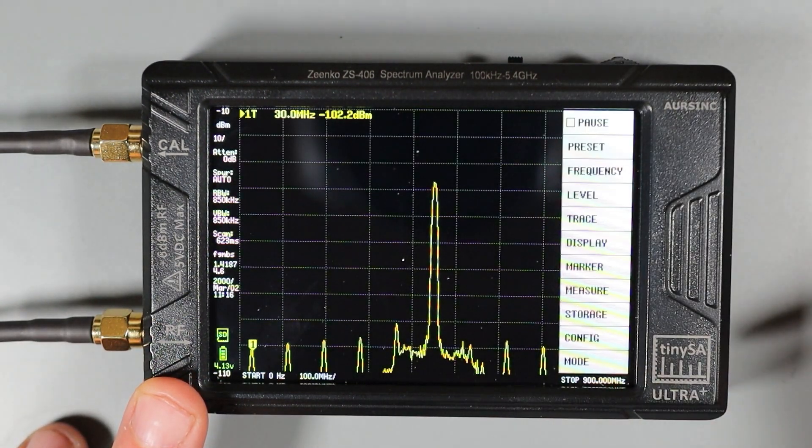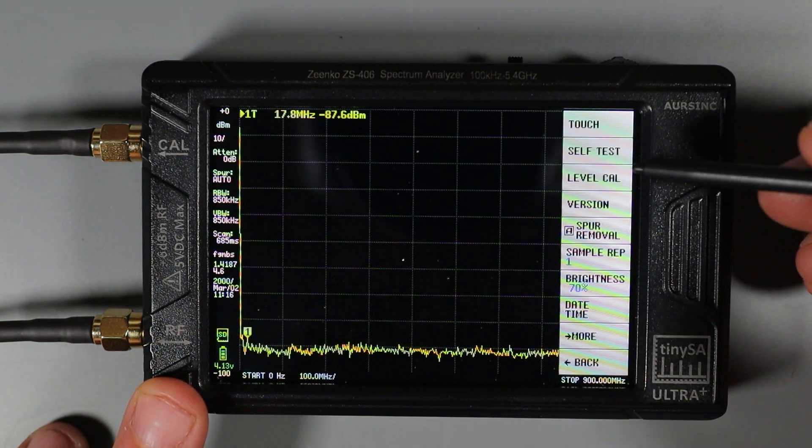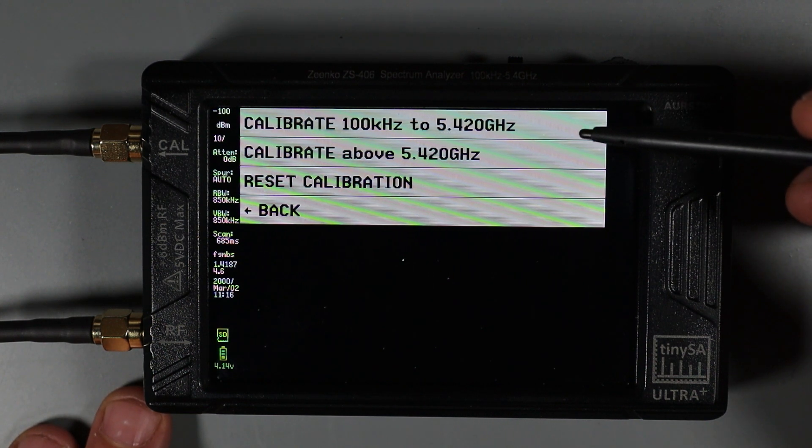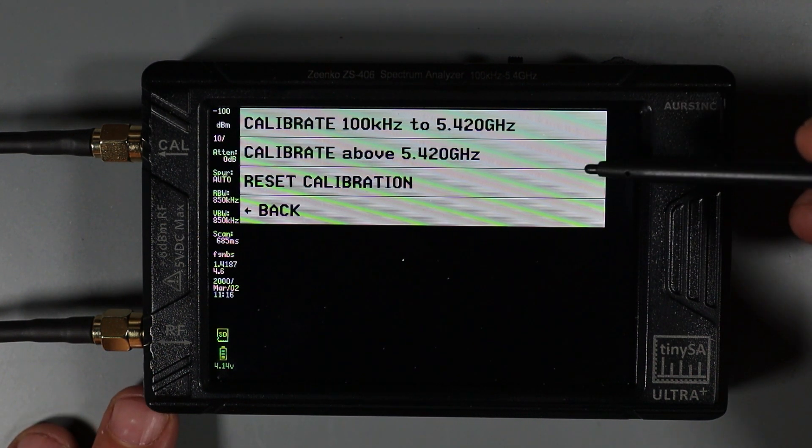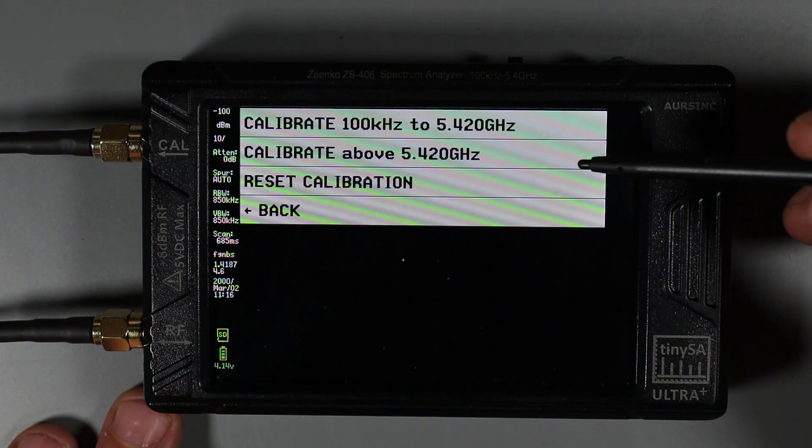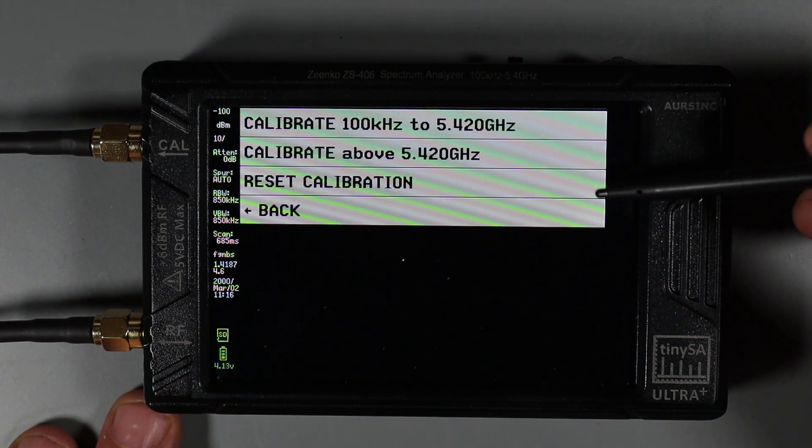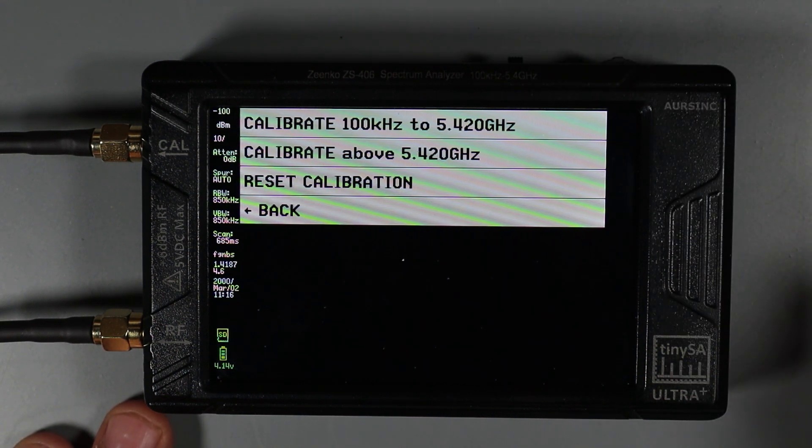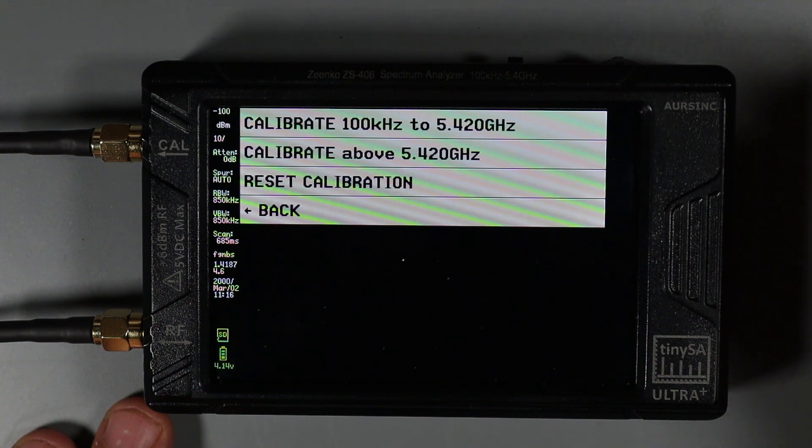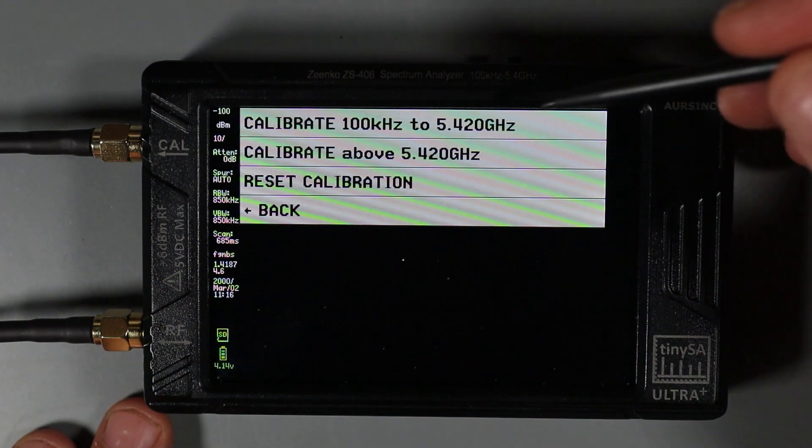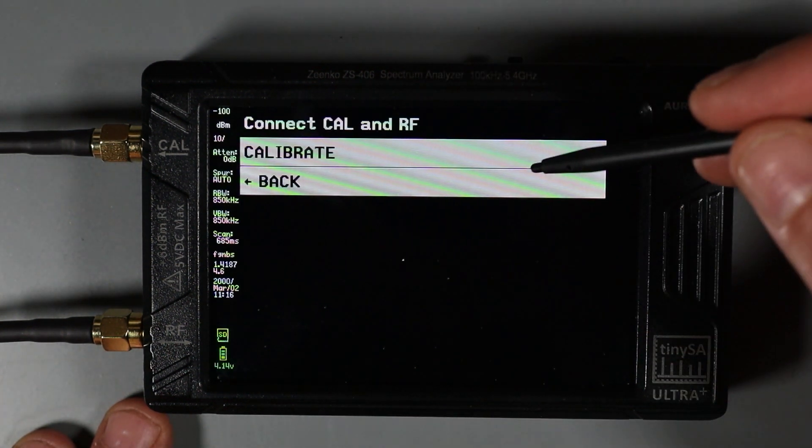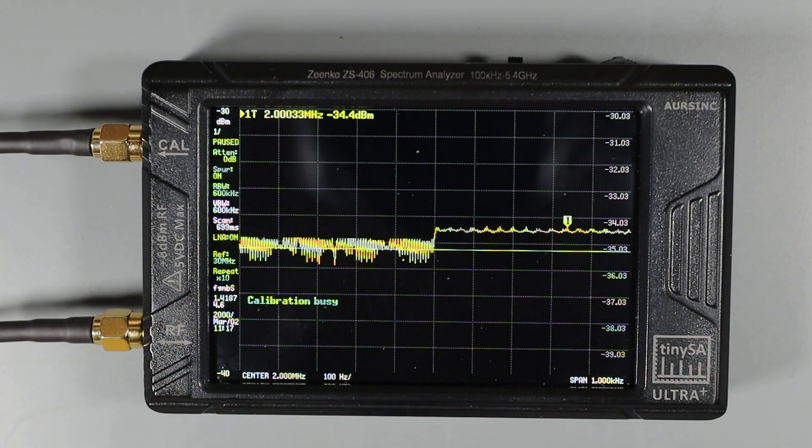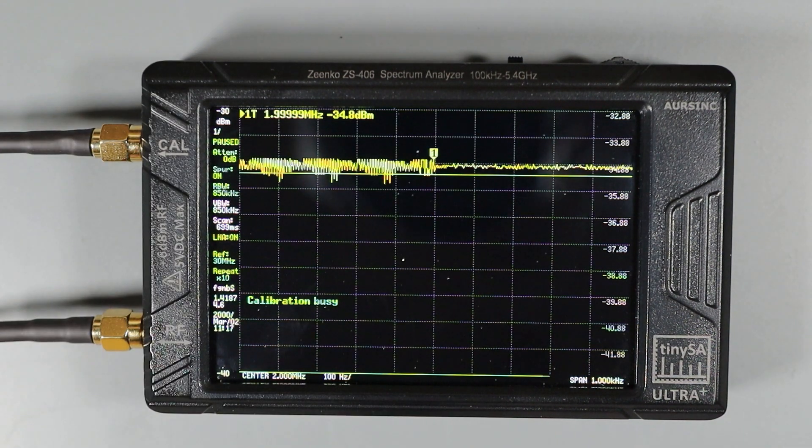I'm going to again access the top level menu, go to config and then choose level cal. From this menu, we have two choices, one for calibration up to 5.4 gigahertz and calibration above 5.4. Calibration above 5.4 requires some extra steps that I'm not going to cover in this video. So I'll leave links in the video description in case you want to see calibration above 5.4. For now, I'm going to choose the first option and then click calibrate and you'll see the TinySA will now go through a series of calibration tests and give us status messages when it's complete.